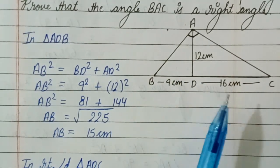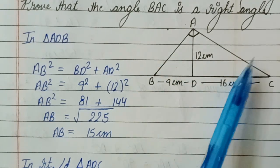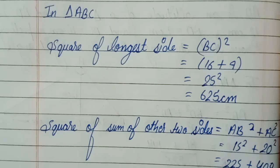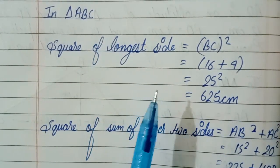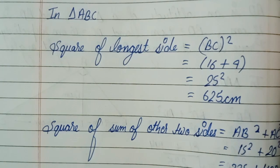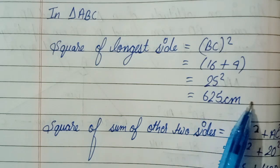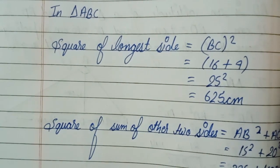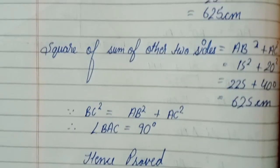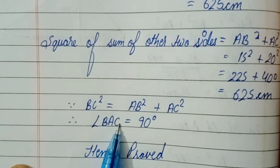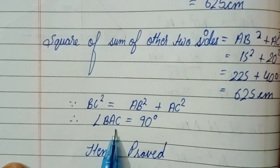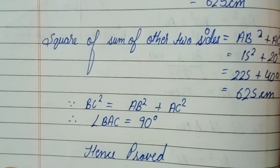Since we have AD and BD given, we can find AB and AC from the two sub-triangles. In triangle ABC, BC square equals AB square plus AC square. The square of the longest side is 625 and the square of the sum of the other two sides is also 625. This directly shows BC square equals AB square plus AC square, proving angle BAC equals 90 degrees by Pythagoras theorem. Hence proved.